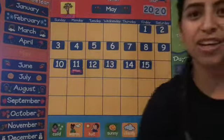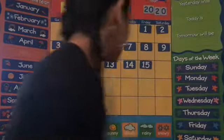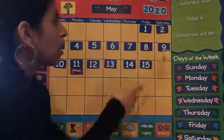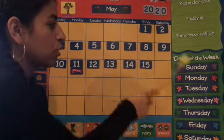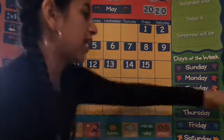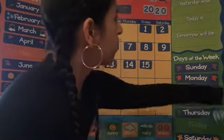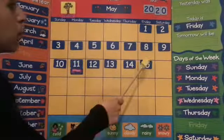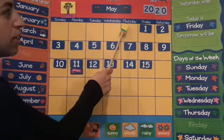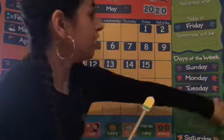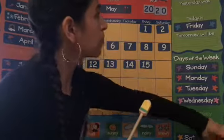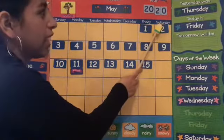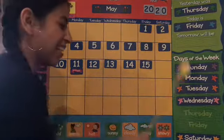So I'm gonna move over here so you guys can see. We put our number fifteen on Friday, so we know that today is Friday. And because we know what today is, we also know what yesterday was — Thursday. And that tomorrow is the weekend and it will be Saturday.